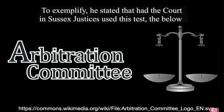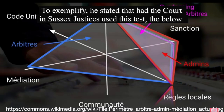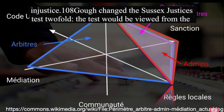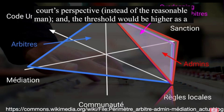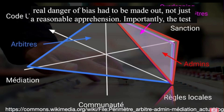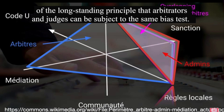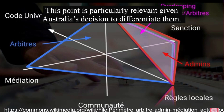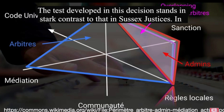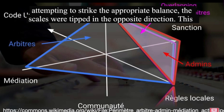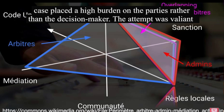The House of Lords also altered the test so that it was from the perspective of the court, rather than a reasonable man. This was intended to lessen the burden on the court with respect to the extra step of imputing matters. Whilst a good intention, as is made clear later, this detracted from the public's perception — a matter considered fundamental in the administration of justice. Thus, whilst it might be considered a relatively minor matter, the implications of this change were large. Lord Wolfe noted that if a court finds there is no danger that the alleged bias created injustice, then the decision should not be quashed. To exemplify, he stated that had the court in Sussex Justices used this test, the below decision would not have to be overturned as the appearance of bias did not amount to a danger of injustice.